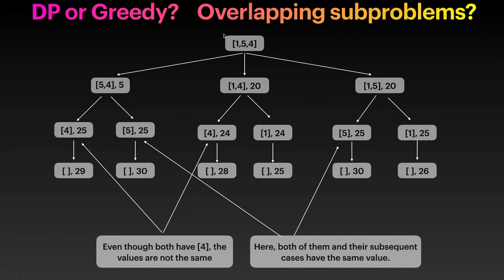Let's see. Our nums array is [1, 5, 4]. Here you pop 1 first, here you pop the middle guy 5 first, and here you pop the last guy first. Then you record the number of coins — so this gives 5, 20, and 20 — and then you do the same thing to see if you can find overlapping sub-problems.